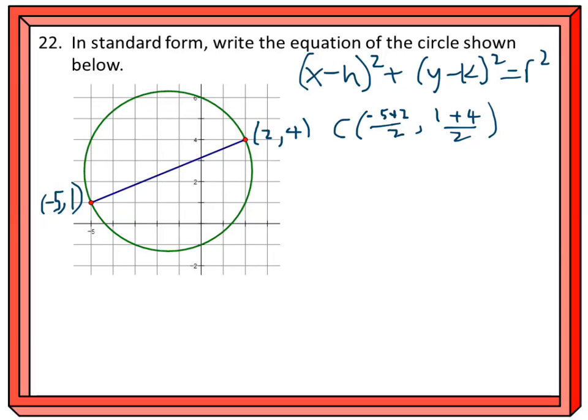I get negative 3/2 and 5/2, or -1.5 and 2.5, which makes sense on the picture right there.